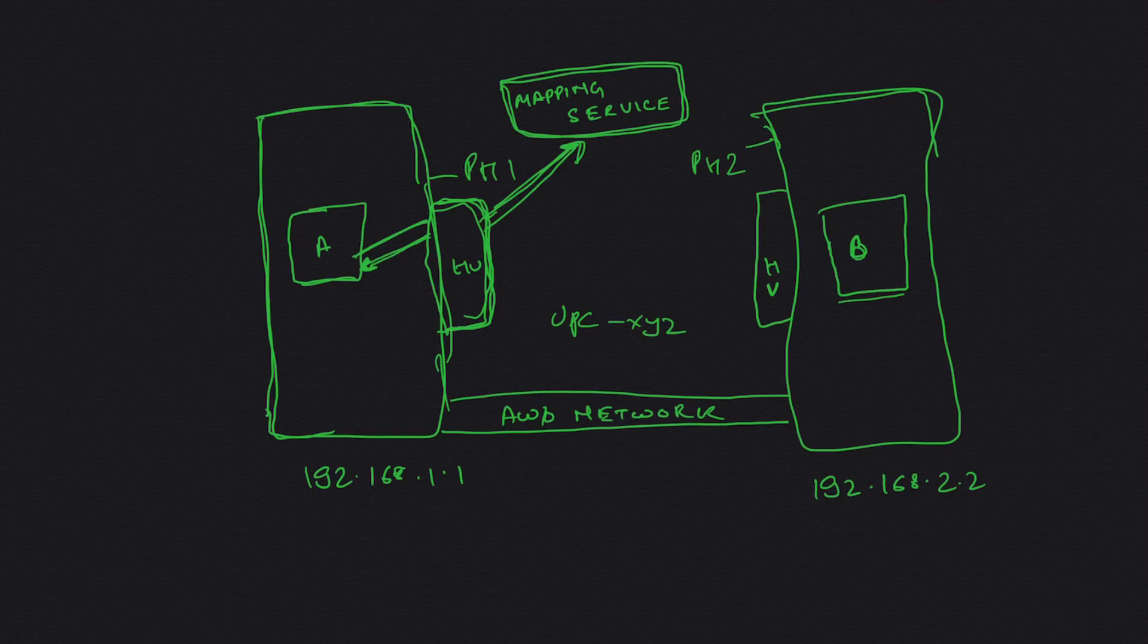Now instance A is ready to send an IP packet to instance B. The IP packet has basically instance A's IP as source IP, instance B's IP as destination IP, and also the IP packet is encapsulated with an Ethernet header which has instance A's MAC address as the source address and instance B's MAC address as the destination address.